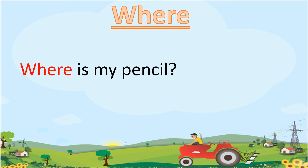Our fourth sight word is 'where'. W-H-E-R-E. 'Where' means kahaan. Where is my pencil? In this sentence, the sight word is 'where'.